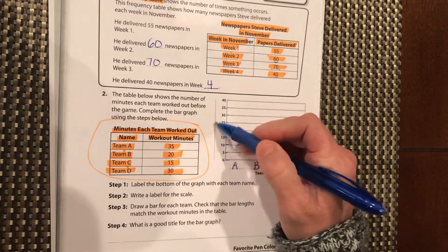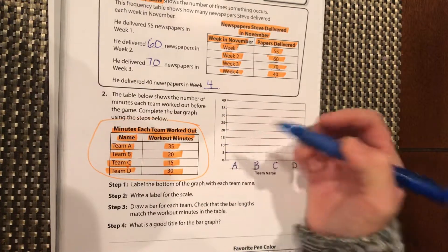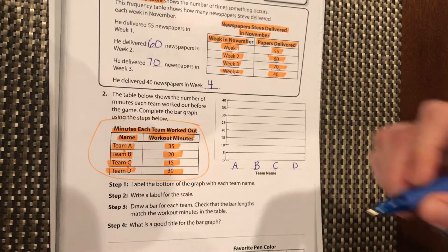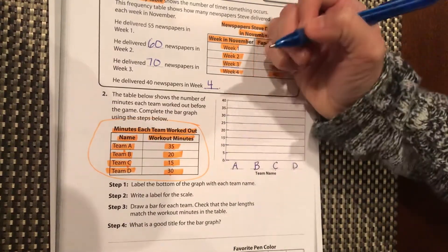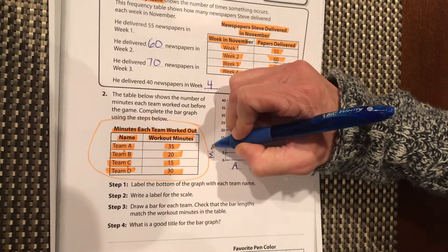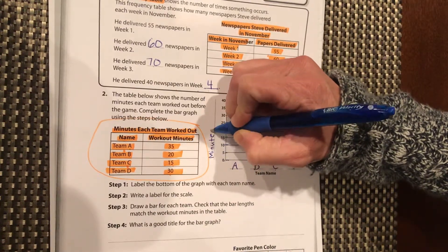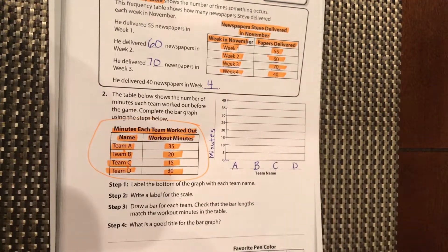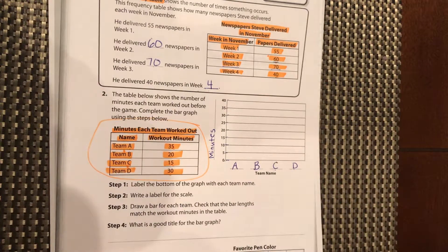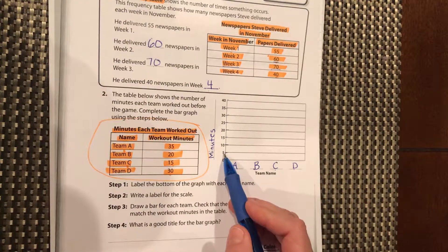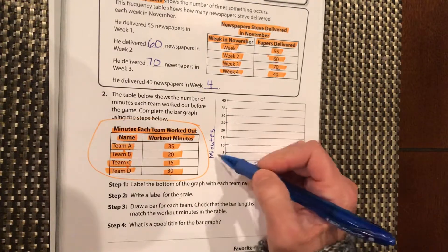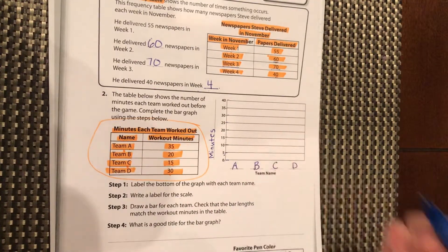So if we want to write a label for the scale, I would say it would just be minutes. This would tell us that this is minutes. We could say number of minutes, but I think minutes is fine. We don't know if this is $5,000, is it $5, is it votes? So we have to give it something. We have to say that these are minutes.